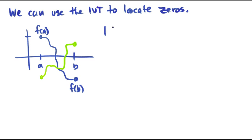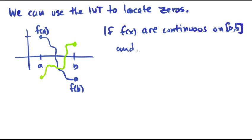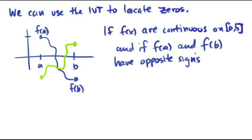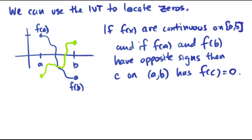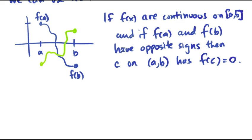So we can state that we can use the IVT to locate zeros because if your functions are continuous on [a,b] and if f(a) and f(b) have opposite signs, then some point c on the interval [a,b] has f(c) = 0, which is how you find a zero or how you prove that there's a zero.